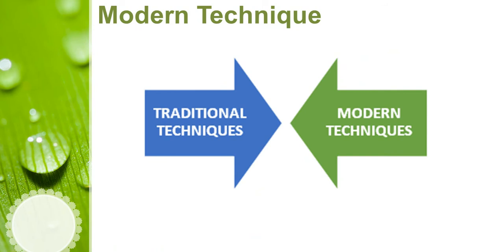The modern controlling techniques are: first, Return on Investment; second, Ratio Analysis; third, Responsibility Accounting; fourth, Management Audit; fifth, PERT and CPM; and the last one, Management Information System. In this class we will discuss each of these modern controlling techniques.